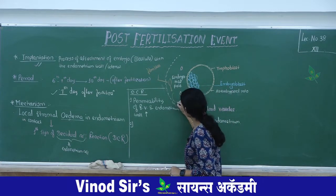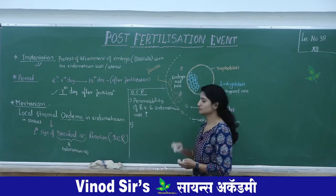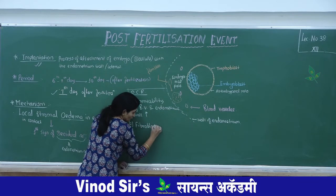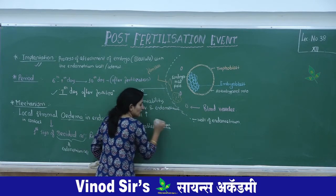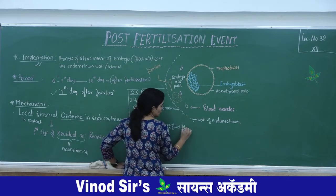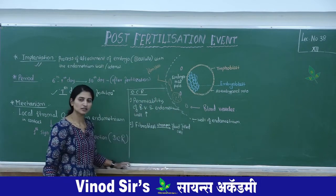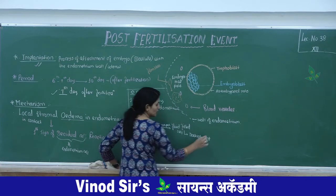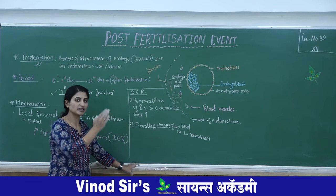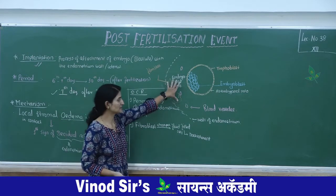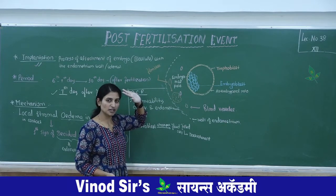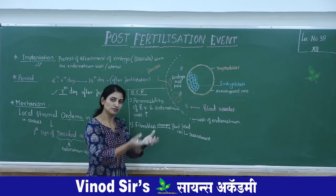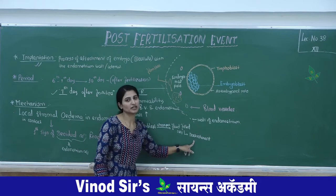The fibroblast cells absorb fluid and become filled; this is required for the nourishment of the further developing embryo. Under the decidual reaction, permeability allows nutrition absorption — the blood vessels allow absorption to become possible. This fluid content stored in fibroblast cells provides the necessary nourishment for the embryo.